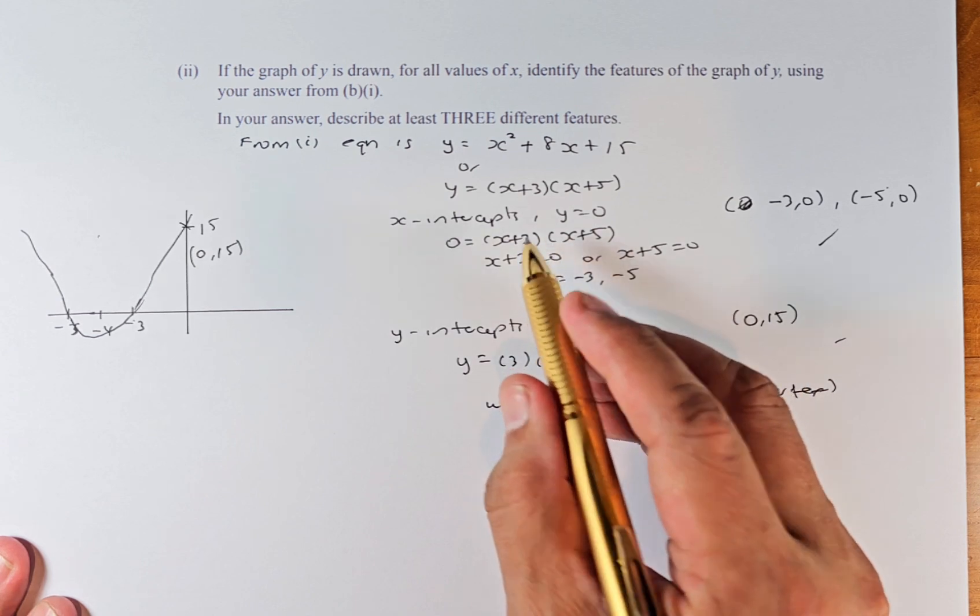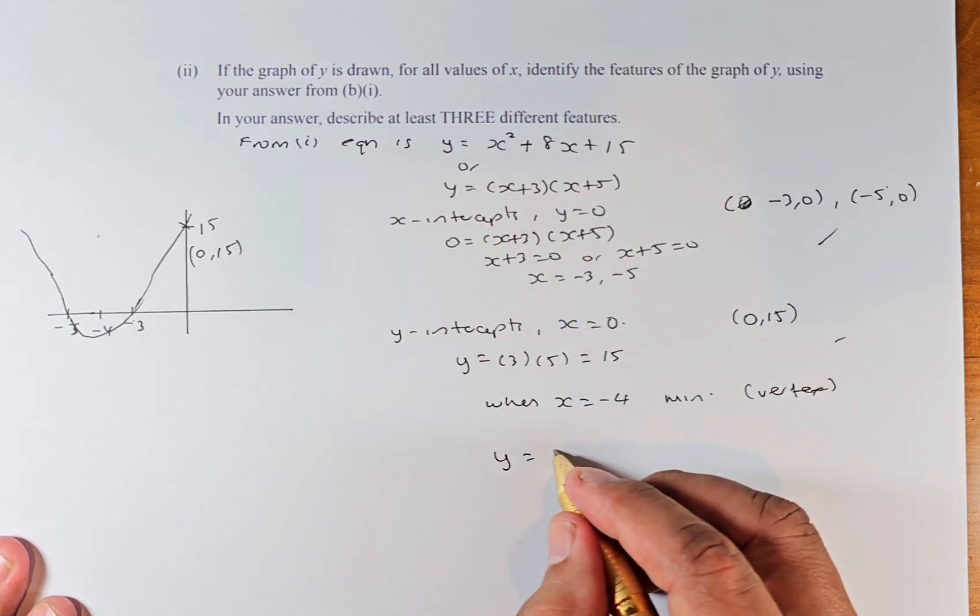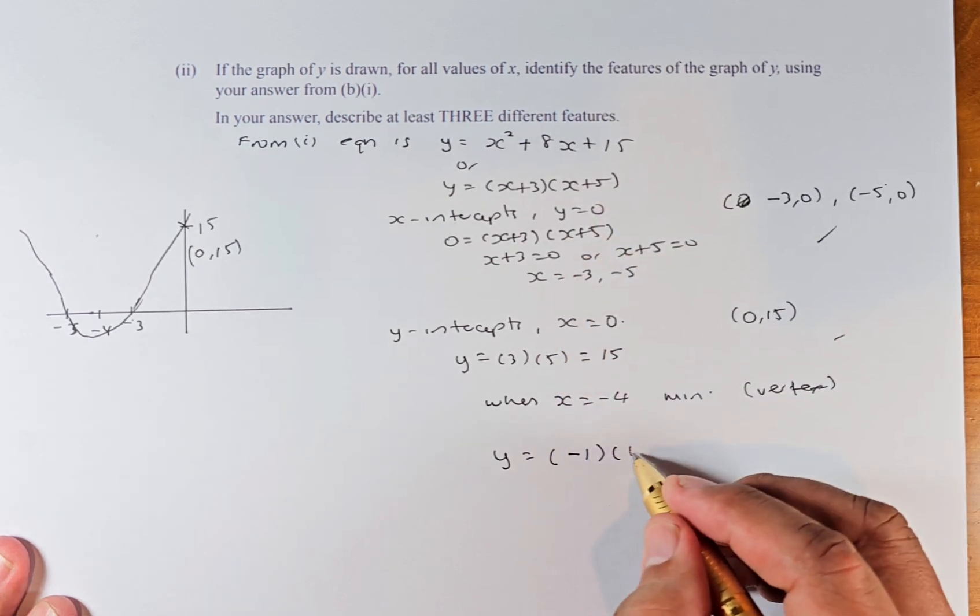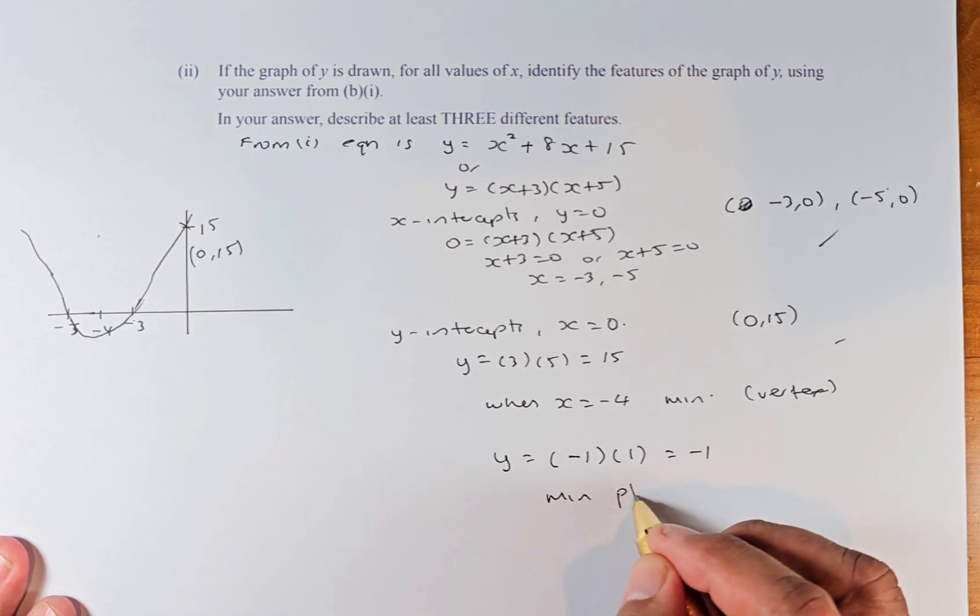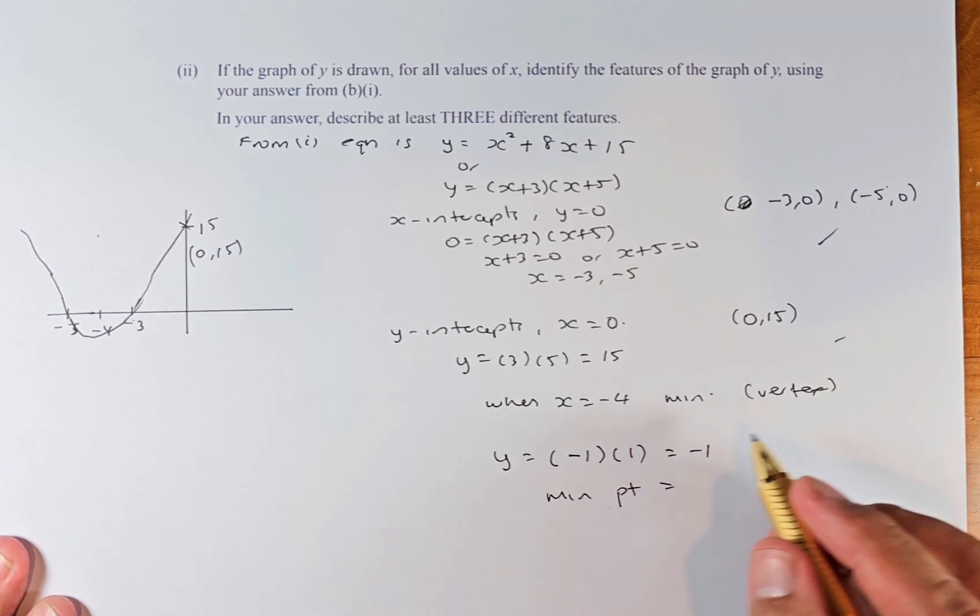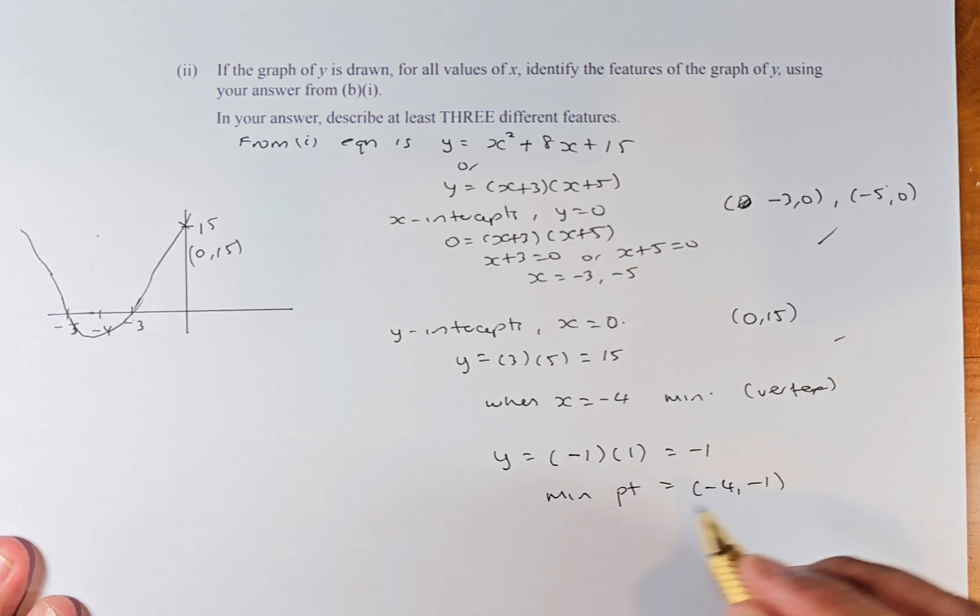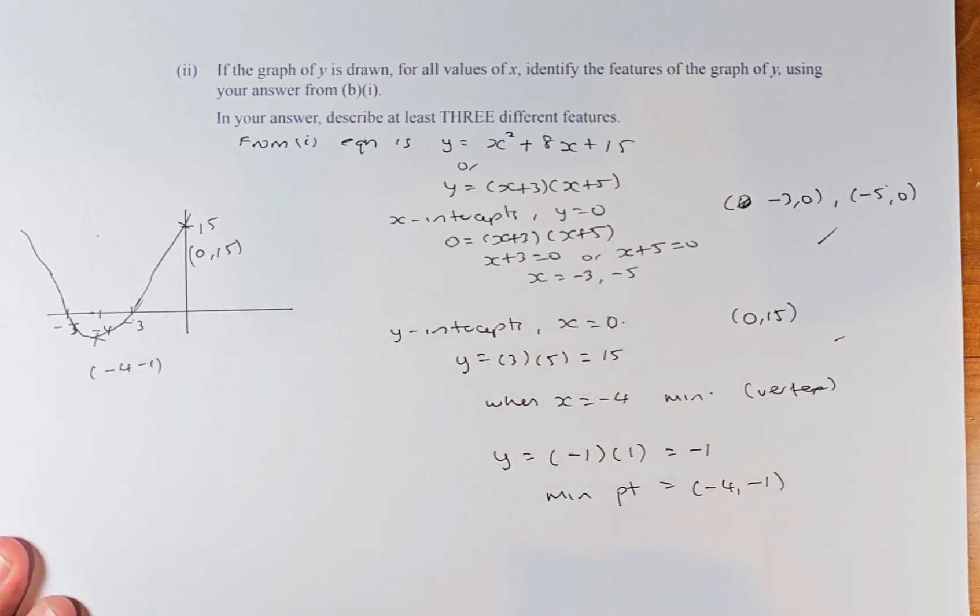So to find the vertex at minus 4, we substitute minus 4 into this equation. So Y equals minus 4 plus 3, which is minus 1, times minus 4 plus 5, which is 1, so it's going to be negative 1. So the minimum point is going to be X is minus 4, and Y is minus 1. So this point here is minus 4, minus 1. That is the third feature.